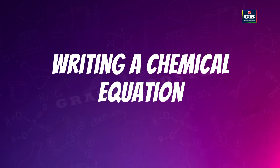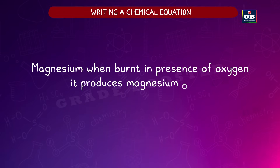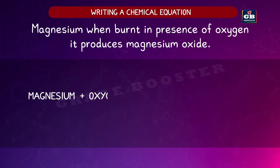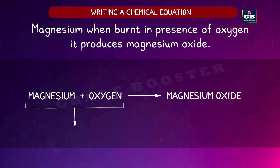A chemical equation describes a reaction. For example, magnesium when burnt in presence of oxygen produces magnesium oxide. This verbal description can be written as a word equation: magnesium plus oxygen gives rise to magnesium oxide. In this equation, the starting materials magnesium and oxygen are called reactants, and the final substance formed, magnesium oxide, is the product.